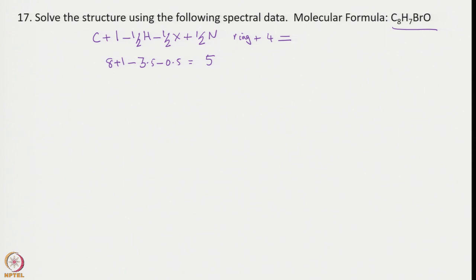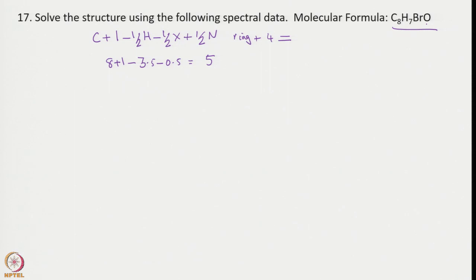A deficiency of 5 means there is certainly a ring plus 4 double bonds. A ring present likely means an aromatic benzene ring, which accounts for 3 double bonds and the ring — that accounts for 4. So we still have to account for one more double bond, meaning there is probably a ketonic carbonyl group or some other functional group. With this information, let us look at the 1H NMR spectrum.